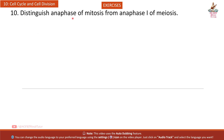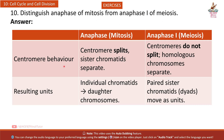Question 10: Distinguish anaphase of mitosis from anaphase 1 of meiosis. Centromere behavior — Anaphase mitosis: centromere splits, sister chromatids separate. Anaphase 1 meiosis: centromeres do not split, homologous chromosomes separate. Resulting units — Anaphase mitosis: individual chromatids (daughter chromosomes). Anaphase 1 meiosis: paired sister chromatids (diads) move as units.